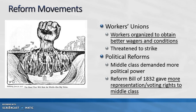Workers began to organize into unions — organizations that fight for better wages and conditions. They threatened to strike if their demands were not met and became a very powerful force. We also see political reforms: the middle class began to demand more political participation, and the Reform Bill of 1832 gave more representation and voting rights to the middle class in Great Britain.